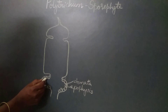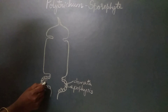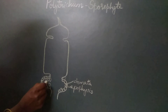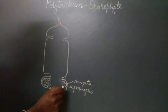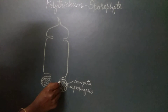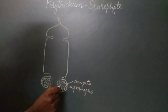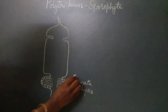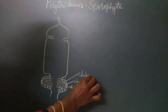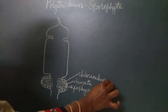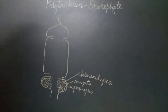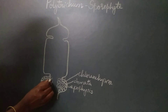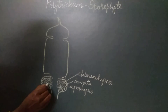Inner to the epidermis, the cortical region is composed of parenchymatous cells with intercellular spaces. These parenchymatous cells contain chloroplasts — that is, the cortical zone of the apophysis is chlorenchymatous, or made up of chlorenchyma tissue, which is parenchyma tissue containing chloroplasts that helps in the process of photosynthesis.